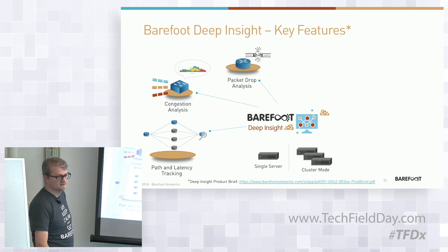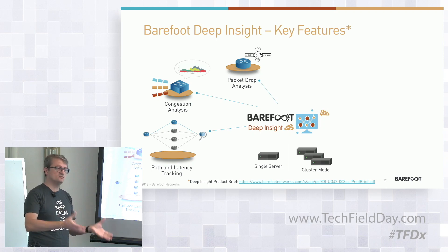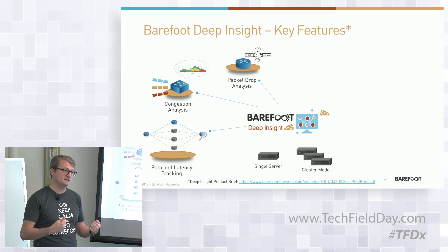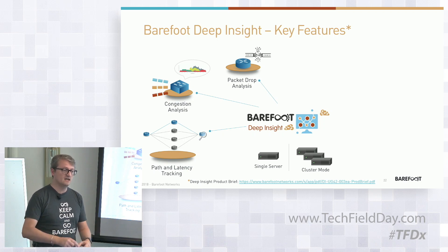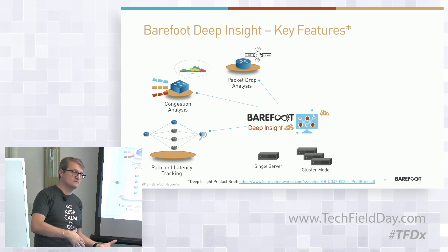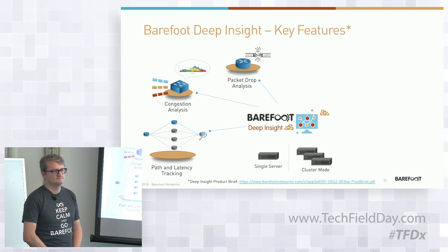Today we don't do automated remediation because we don't have provisioning control over the network. But through the northbound API we can expose these anomalies — you can subscribe to a specific anomaly, receive it, and if you have a controller architecture, it can reroute around congestion or implement QoS policy to fix the problem on the spot. If you had Tofino chips inside those switches, you could make this a faster reality.